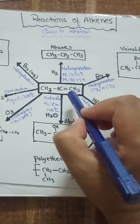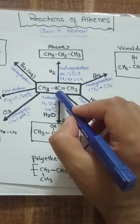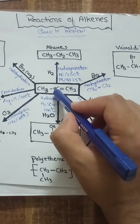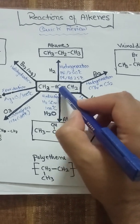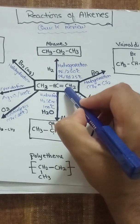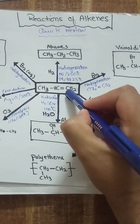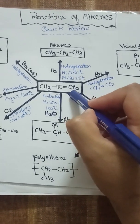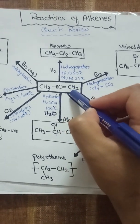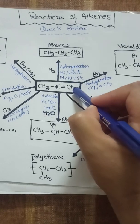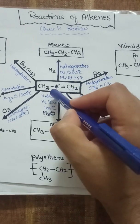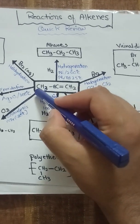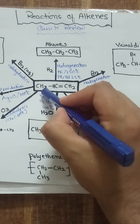An unsymmetrical alkene is one in which the two carbons bonded together through a double bond are different from each other. For example, here one carbon has two hydrogens while the other carbon has one hydrogen and one methyl group.